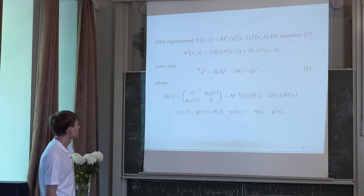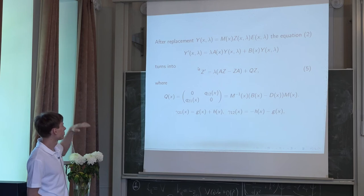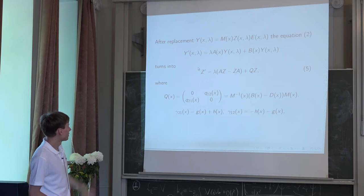After this replacement, we go from equation two, you can see it on the top of the slide, and we go to system five for Z. And here A, it is the diagonal matrix as initial.